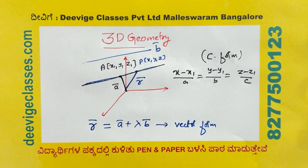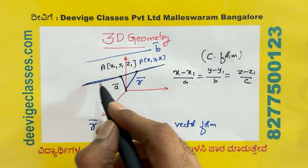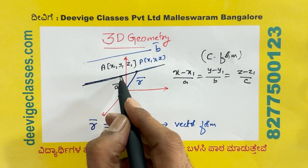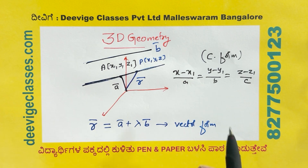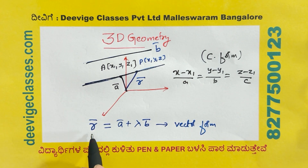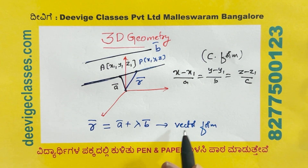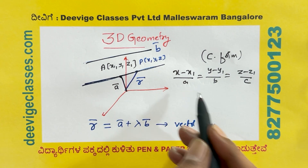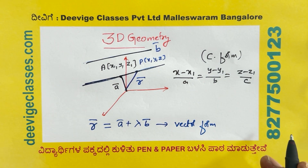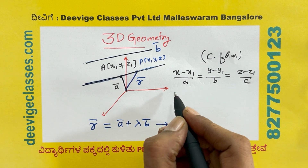So I will repeat this once again. The equation of a line passing through a given point parallel to a given vector is given by vector R equals A plus lambda B. Its Cartesian form is given by x minus x1 over A equals y minus y1 over B equals z minus z1 over C.